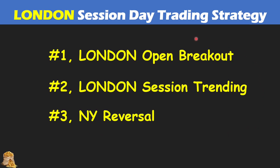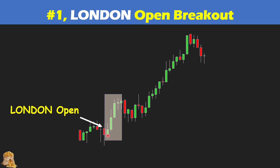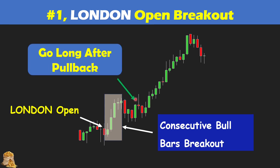Let's first look at the London open breakout. Here we can see the London open is around this area, and immediately after the open we can see consecutive one, two, three, four, five bull bars breaking out. This breakout with consecutive bull bars means the direction of the trend is to the upside, and after the pullback you want to trade up. The key is that you want to see a strong breakout with consecutive bull bars or bear bars, and the middle two bull bars are larger than any of the bars on the left — so this is a good breakout. Otherwise, if the breakout is weak, you want to wait and hold.